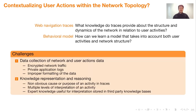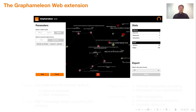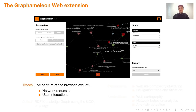Addressing these questions raises two types of challenges that we summarize as data collection and knowledge representation and reasoning. To tackle these issues, we propose the Graphamelon web extension. It enables the real-time capture of web navigation traces at the web browser level, including network requests and user interactions. The data capture results in a timestamped navigation graph that can be exported as a knowledge graph in RDF format, aligned with the UCO ontology, which is a well-known ontology in the field of cybersecurity.